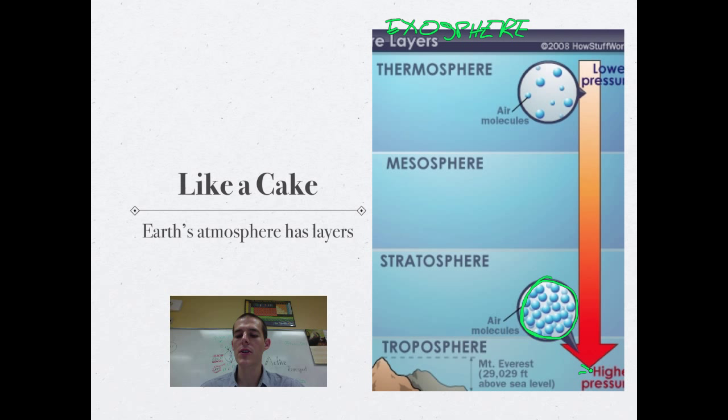When you are down near the surface of the earth, air molecules are very tightly packed together. That's because gravity is pulling them all together. In that case, you've got high pressure. As you move up through the atmosphere, your pressure goes down. The more spread out the air molecules are, the lower the air pressure.